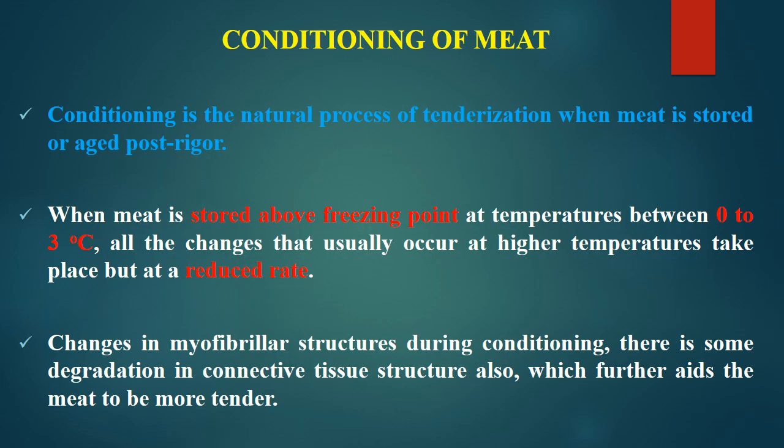Now we will focus on conditioning or aging. Conditioning is a natural process of tenderization when meat is stored or aged after rigor mortis. This is a natural practice of holding the meat to improve its tenderness, flavor, and juiciness. When meat is stored above freezing point at a temperature between 0 to 3 degrees Celsius, all the changes that would normally occur at higher temperatures take place at a slow rate. Holding meat at higher temperature makes changes happen faster, but that may lead to spoilage. To avoid spoilage, it is held at a lower temperature for longer so that desirable changes slowly take place.